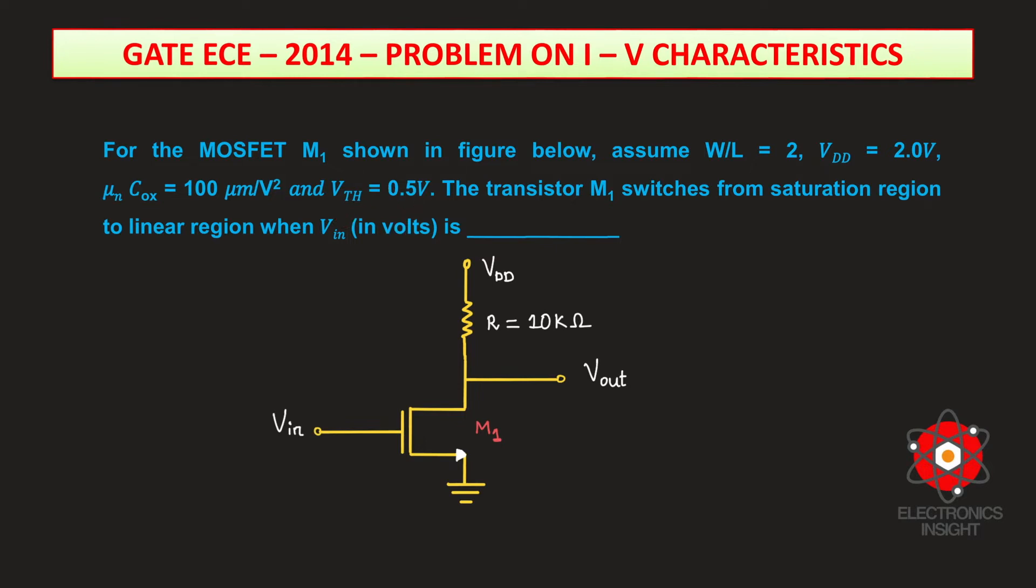We need to find out the input voltage at which the transistor M1 switches from its saturation region to linear region. We have an NMOS transistor along with a resistive load.